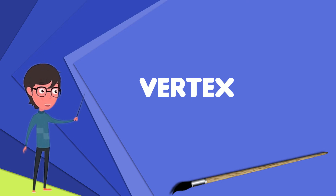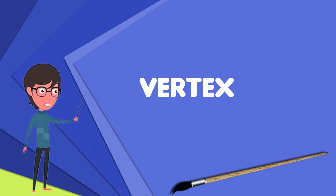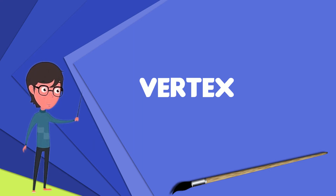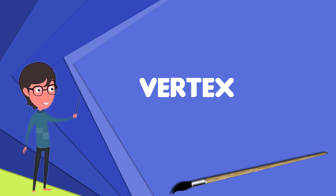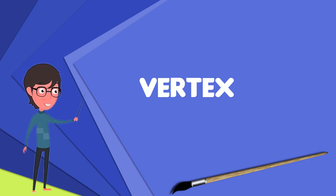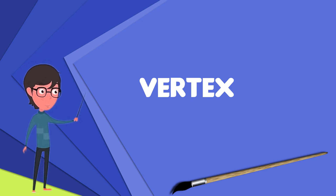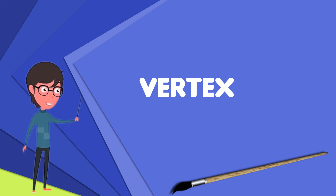The two vertices forming an edge are said to be the endpoints of this edge, and the edge is said to be incident to the vertices. A vertex W is said to be adjacent to another vertex V if the graph contains an edge. The neighborhood of a vertex V is an induced subgraph of the graph, formed by all vertices adjacent to V.